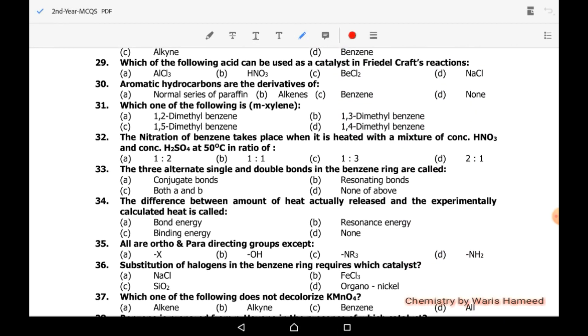Which of the following acid can be used as a catalyst in Friedel-Crafts reaction? It's aluminum trichloride. Aromatic hydrocarbons are the derivatives of benzene. Which one of the following is meta xylene? It's 1,3-dimethylbenzene. The nitration of benzene takes place when it is heated with a mixture of concentrated nitric and concentrated sulfuric acid with a ratio 1:1.